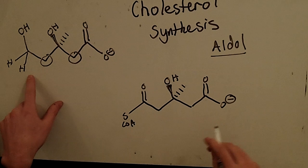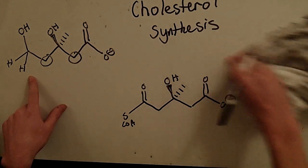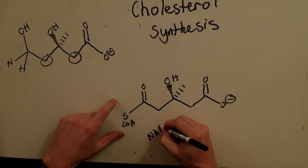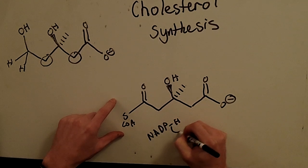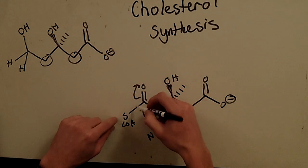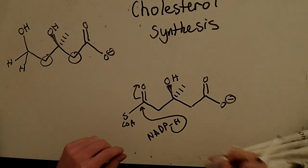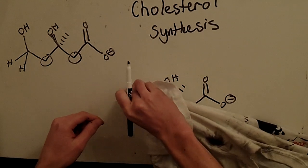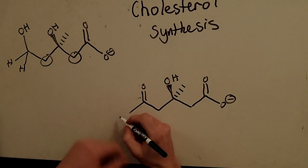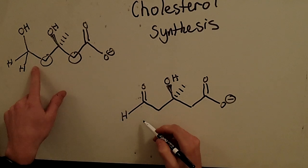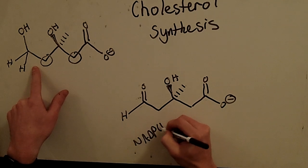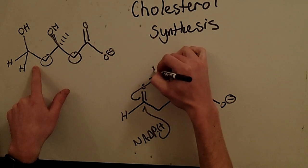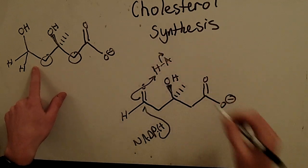Now we just have to reduce here — this is the regulation step. Remember, HMG-CoA reductase. We use NADPH; the electrons come in and attack, forming the tetrahedral intermediate, which collapses and the S-CoA leaves. We replace the S-CoA with the hydrogen from NADPH. We do it one more time with a second NADPH — it comes in, attacks, and this time it's protonated to form the alcohol via a general acid.